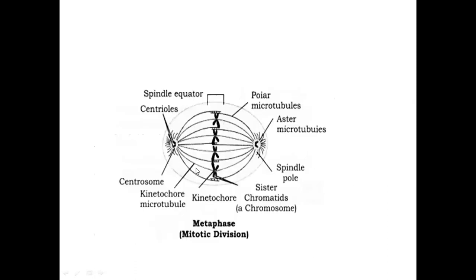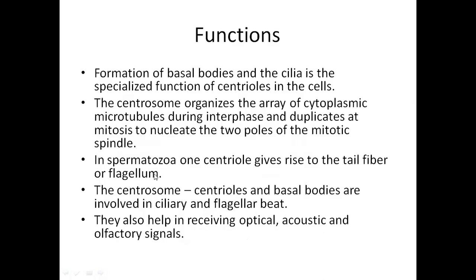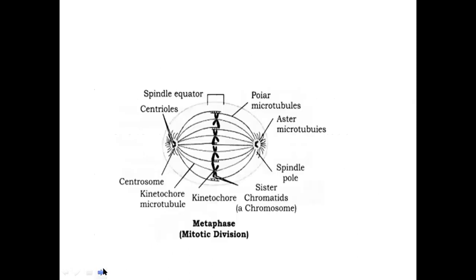By the end of prophase, the duplicated centrioles move to the poles and start producing the spindle fiber microtubules, which are essential for chromosomal segregation between the two daughter cells. In some spermatozoa, centrioles give rise to the tail fiber or flagellum. The centrosome — centrioles and basal bodies — are involved in ciliary and flagellar movement. They also help in perceiving optical, acoustic, and olfactory signals.